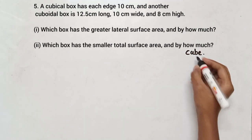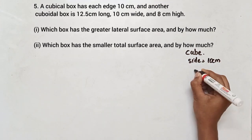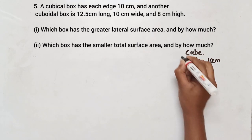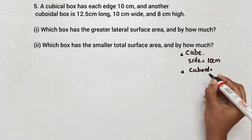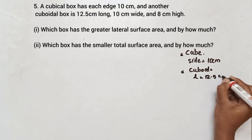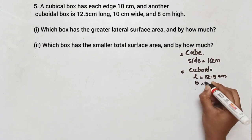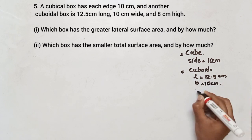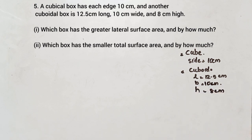For the cubical box, one side is 10 cm. For the cuboidal box, the length is 12.5 cm, the width is 10 cm, and the height is 8 cm. The first part of the question is: which box has a greater lateral surface area and by how much?